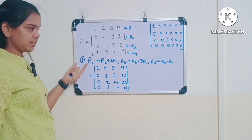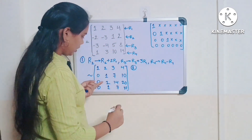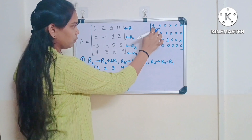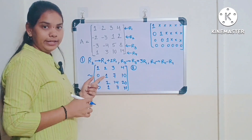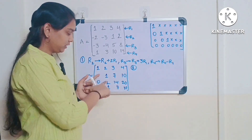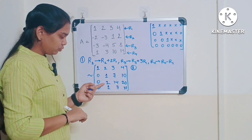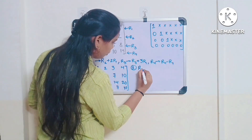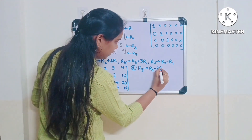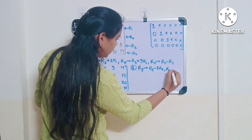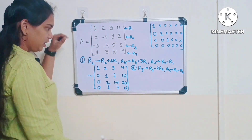For the second step: there is no change in R1. For R2, the first element is 1, so there is no need to change it. Now we apply: R3 → R3 − 2×R2 to get 0, and R4 → R4 − R2 to get 0.